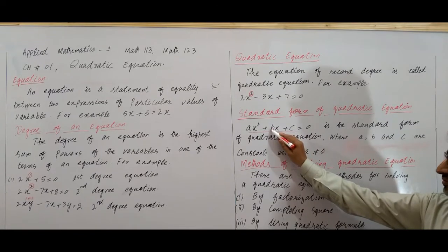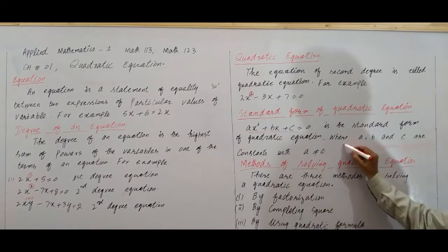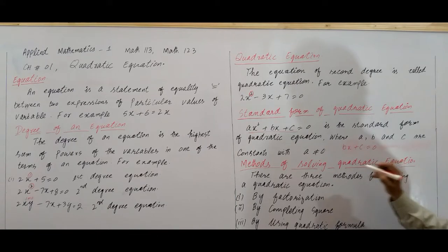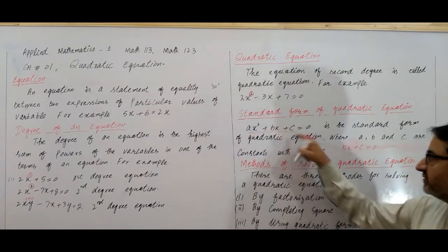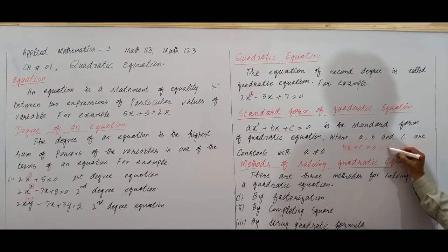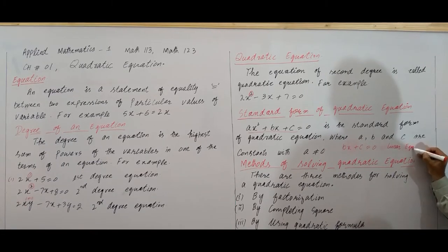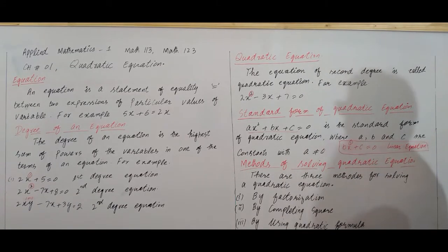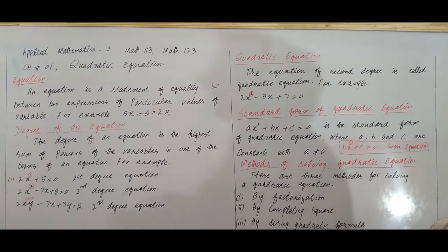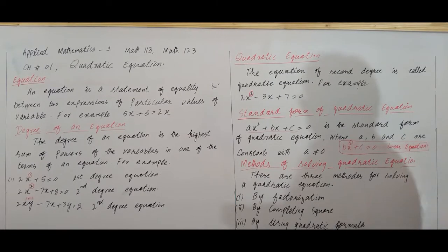If a becomes 0, then our equation takes the form bx plus c equals 0. If we set a to 0, it multiplies with x², so the equation becomes bx plus c equals 0. This is no longer quadratic — it becomes a linear equation. A linear equation has highest power (degree) equal to 1. So a quadratic equation converts into a linear equation if a equals 0.